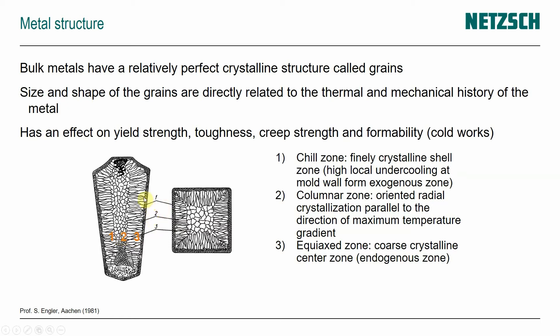Zone one is a very fine crystalline zone called the chill zone — where the highest cooling rates are happening, the highest local undercooling — because that's in contact with the mold wall, forming the exogenous zone. Then, further inward, is the columnar zone, where you have oriented radial crystallization always parallel to the direction of the maximum temperature gradient. If this is the wall it's cooler, and the melt has the highest temperature in the center, so the columns and grains grow in the direction heat conduction goes.